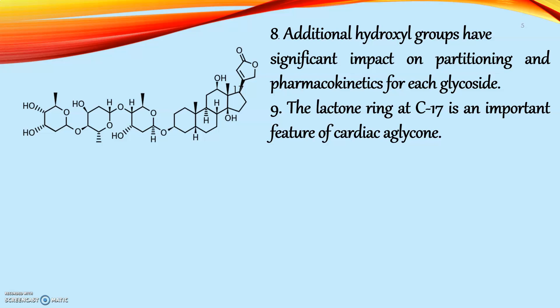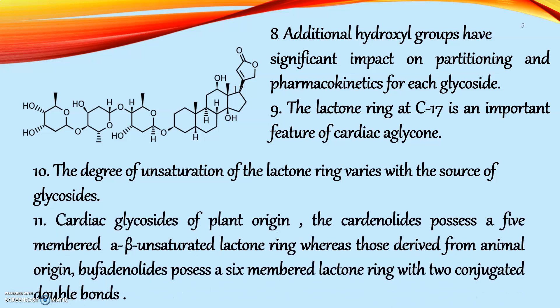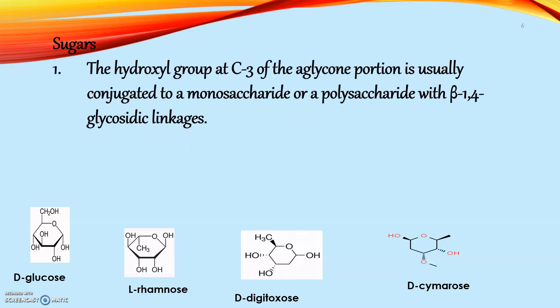The lactone ring at C17 is an important feature of the cardiac aglycone. The degree of unsaturation of the lactone ring varies with the source of the glycoside. Cardiac glycosides of plant origin are called cardenolides and possess a five-membered alpha-beta unsaturated lactone ring. Whereas those derived from animal origin, called bufadienolides, possess a six-membered lactone ring with two conjugated double bonds. The cardenolides have an unsaturated butyrolactone ring while the bufadienolides have a pyrone ring.